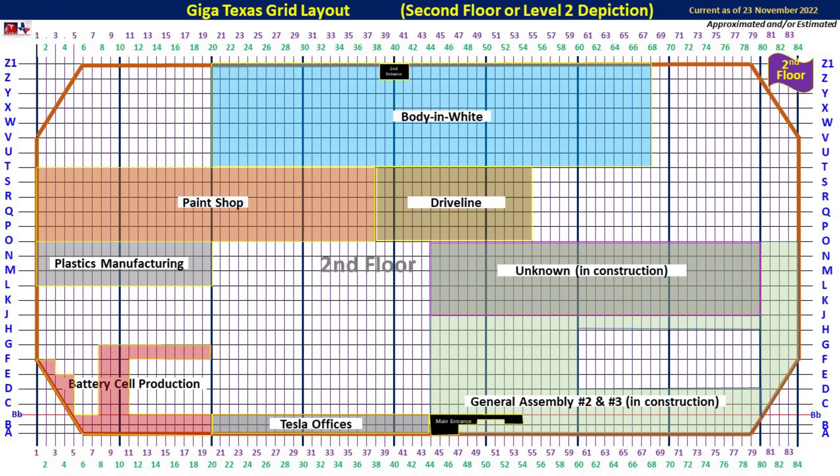Moving up to the second floor, you can see some second floor elements of the battery cell production, the Tesla offices — which is where the headquarters is located — the main entrance, General Assembly Lines 2 and 3, an unknown construction location in that area, the plastics manufacturing, the paint shop, the driveline, the body in white, and also the secondary main entrance on the east side also has a second floor component.